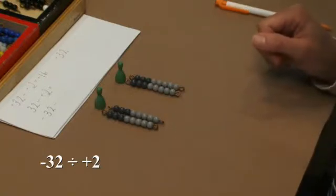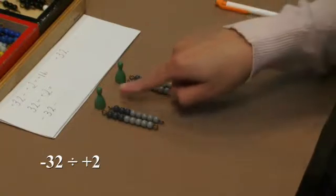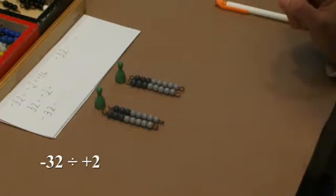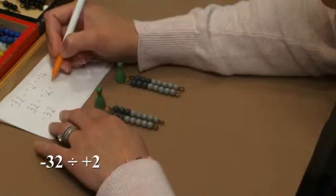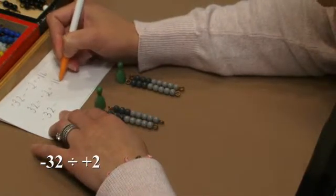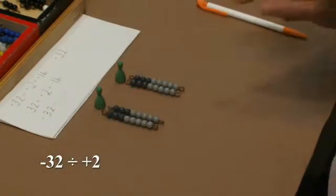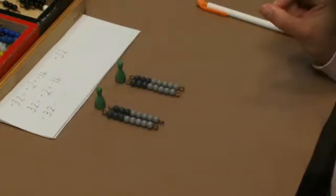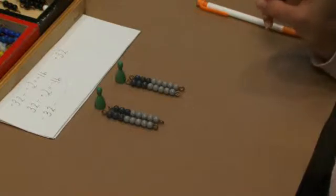So for negative 32 divided by positive 2, each Skittle is going to get negative 16. Here the students might notice, or I would point out, that it appears that our rules are going to be the same as what they were when we were multiplying signed numbers.